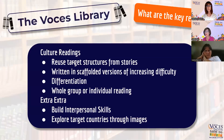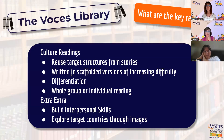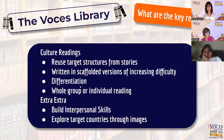After the stories, you've got your culture and Extra Extra sections. The culture readings reuse target structures from the stories, so students will find them easy to read. The embedded readings are written in scaffolded versions — you start with version A, which is simple, and work up to version C, which is more difficult. This allows for differentiation: struggling students might stay on version A, while more advanced students work up to version C. You can do this as a whole group or individual reading, whatever works best.